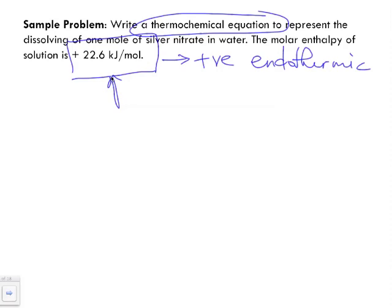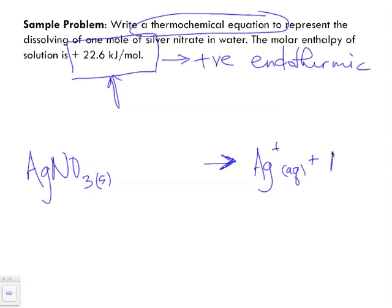So what do we have? Well, we've got AgNO₃ and it's a solid. So silver nitrate as a solid in water will form aqueous silver and it will form aqueous nitrate.